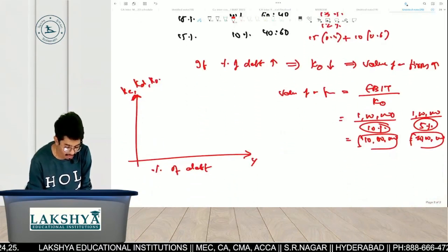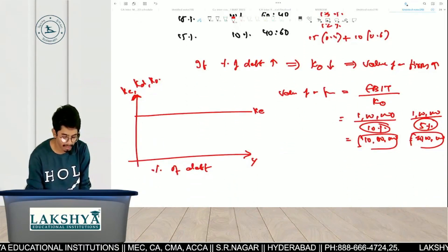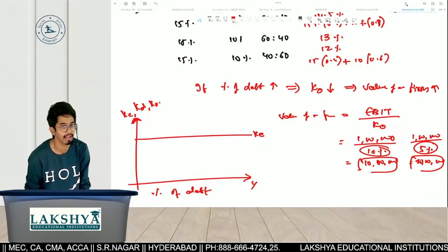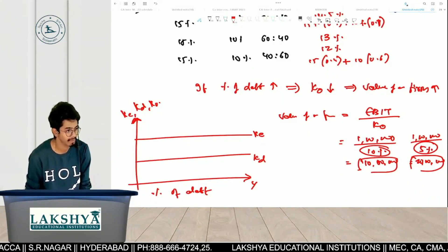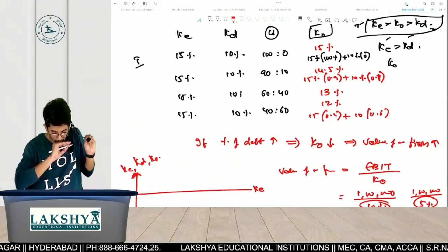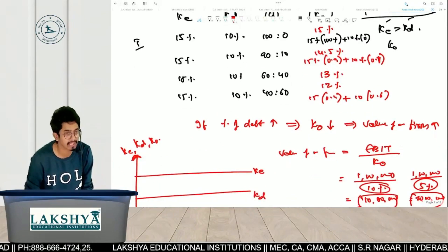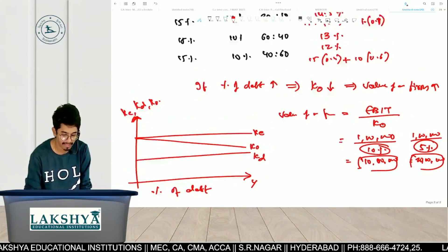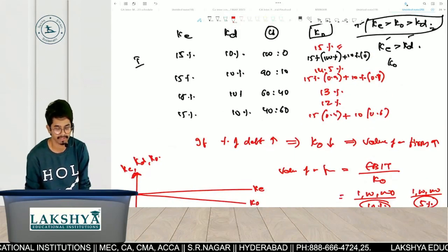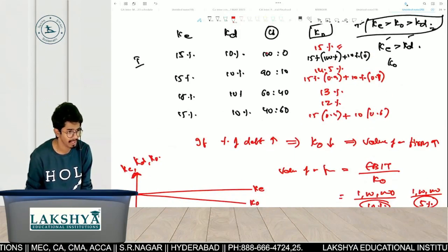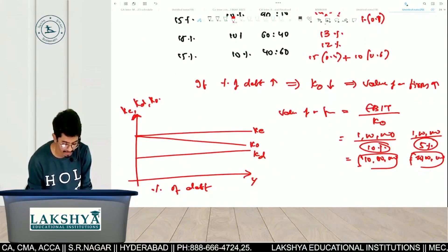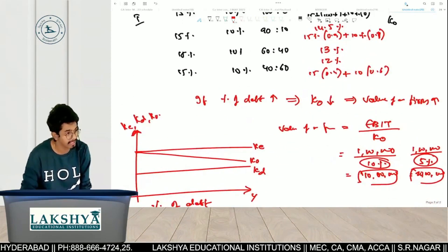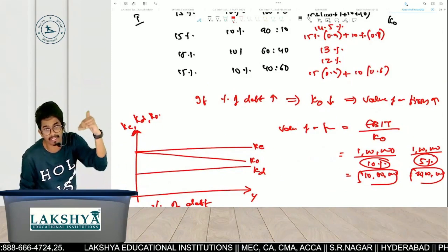K-E is constant at 15% — it remains flat. K-D is also constant at 10%, positioned below K-E. Coming to K-O: at the starting point of 100% equity and 0% debt, K-O equals 15%. As the percentage of debt increases, K-O decreases — so it slopes downward from left to right, from 15% towards 10%.